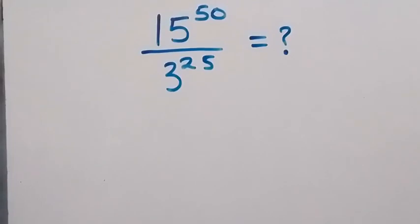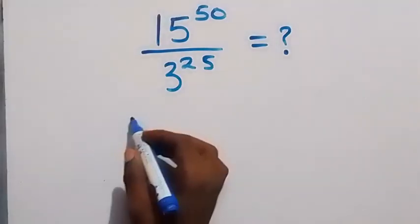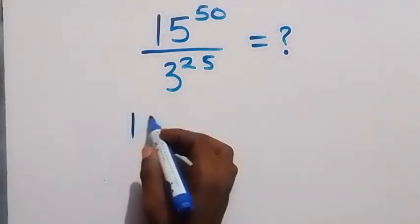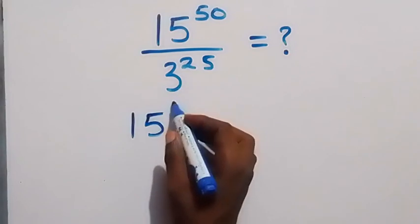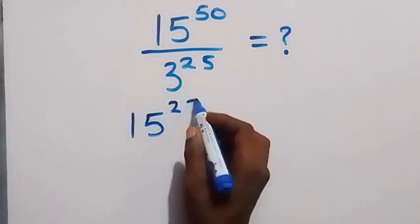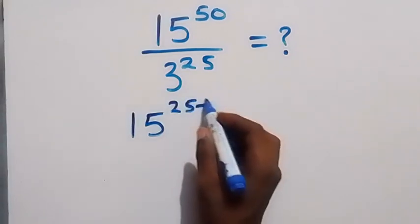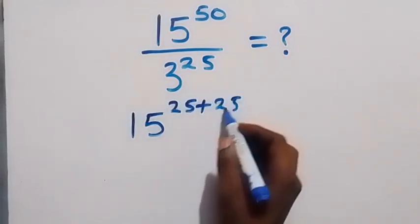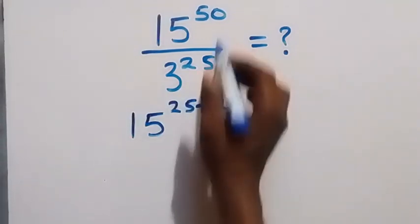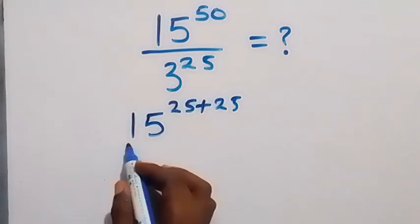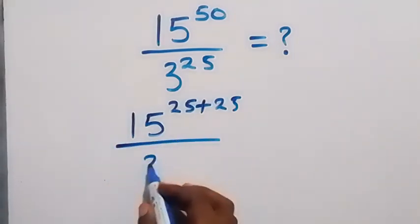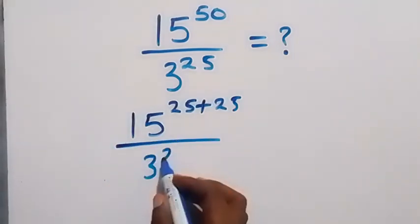Hello, you are welcome here. Let's solve this nice exponent problem. From here we can rewrite this as 15 raised to the power 25 plus 25, which gives us 50, then divided by 3 raised to power 25.